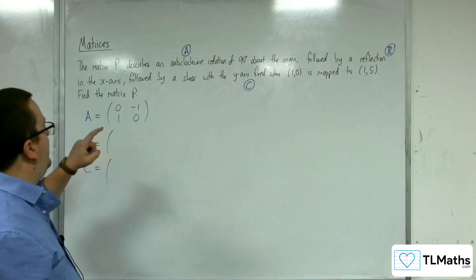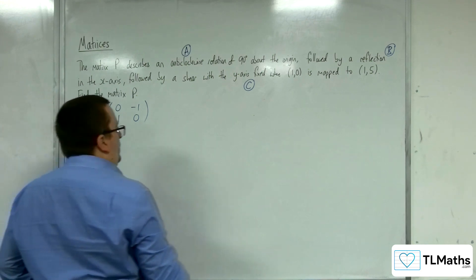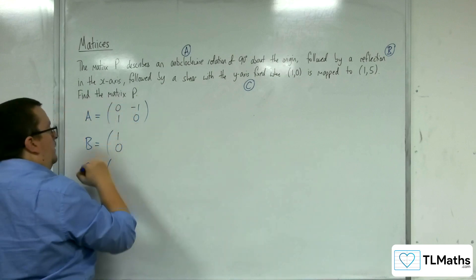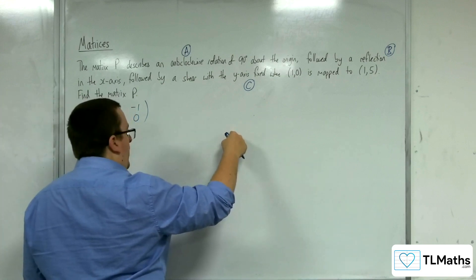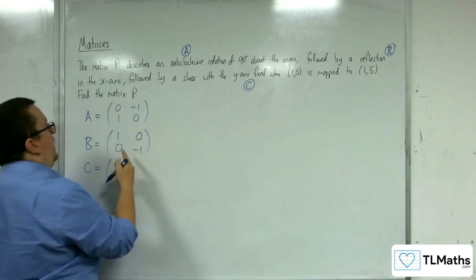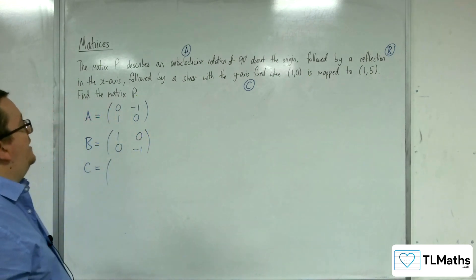Followed by a reflection in the x-axis. So 1-0 would map to itself. 0-1 would go down to 0 minus 1. So that's our reflection in the x-axis.